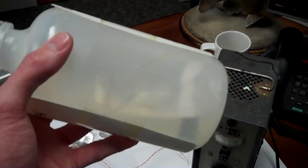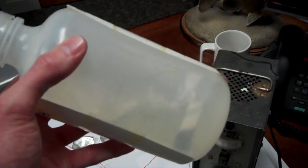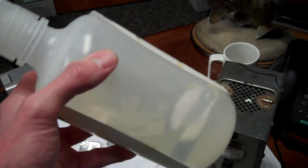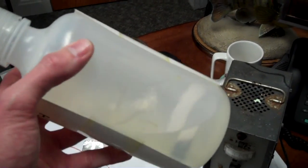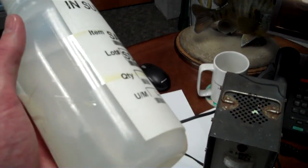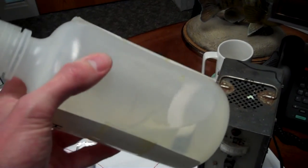They are triethanolamine and dextrose, and they are supplied in the bath in excess so that the end user, the customer, should not ever have to make additions of grain refiners to the plating bath.